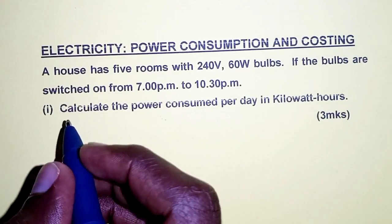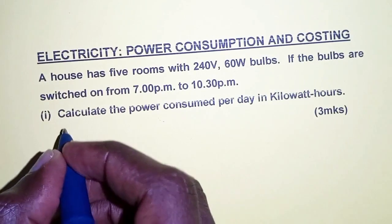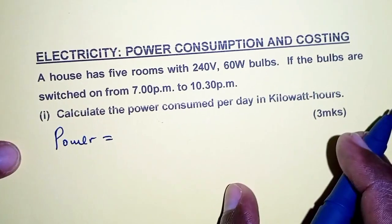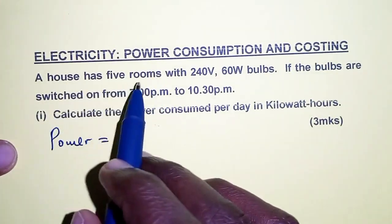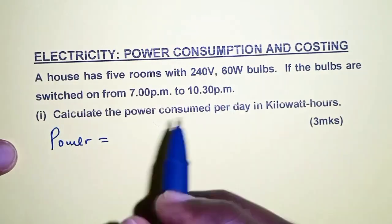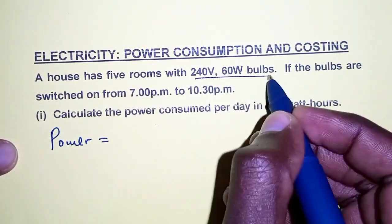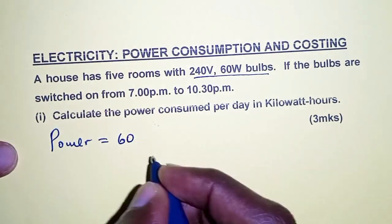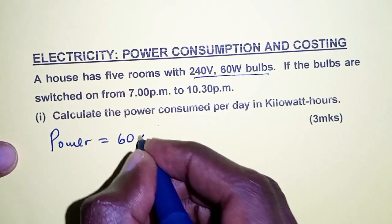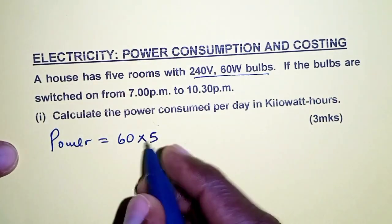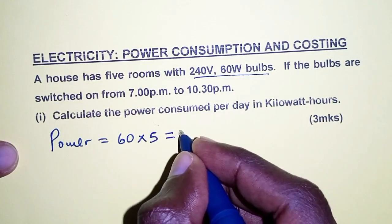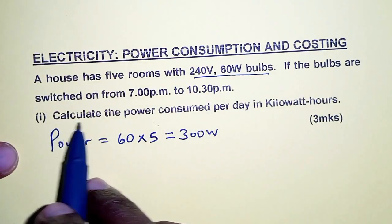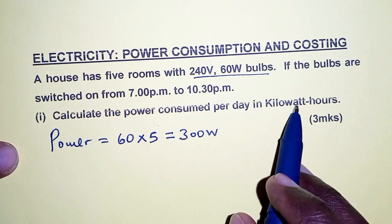We are going to begin by determining the power. We have a house with five rooms, meaning in each and every room we have a bulb. For one bulb we have 60 watts, and for five rooms we multiply by five to get five bulbs, giving us a total power of 300 watts. Remember, we need to determine the power consumed per day in kilowatt hours.